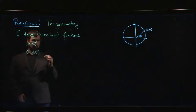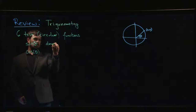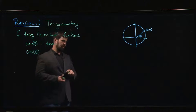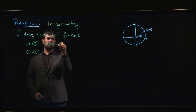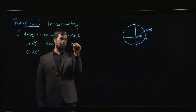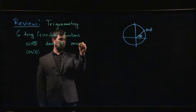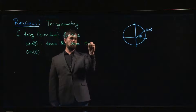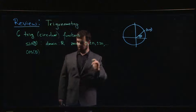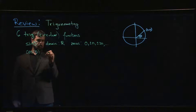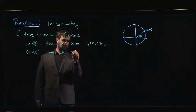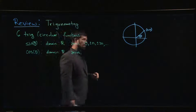We can think of these as functions of a real variable — sine x, cosine x. It's a little confusing because we have x and y on the circle, but the domain is all of R. For reference, the zeros of the sine function are at zero, plus or minus pi, plus or minus 2pi, and so on — any multiple of pi. The domain of cosine is also R.